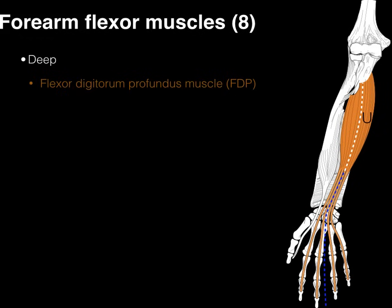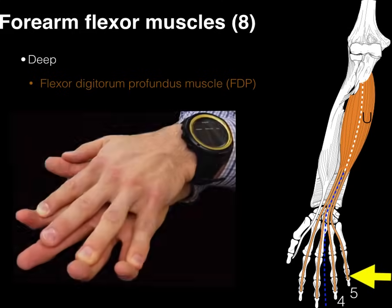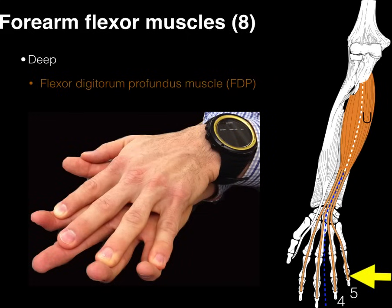The ulnar belly of the FDP acts upon digits 4 and 5, the ring finger and pinky. Bending the DIP joint of those digits is controlled by the ulnar belly of the FDP. You can therefore test the median and ulnar nerves by bending the distal interphalangeal joint: digits 2 and 3 for median nerve, digits 4 and 5 for ulnar nerve.